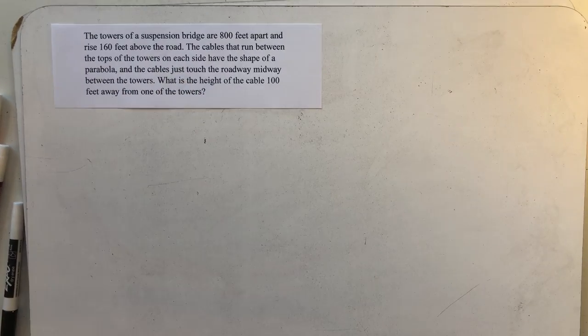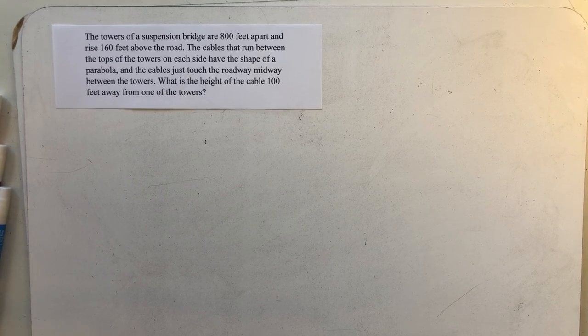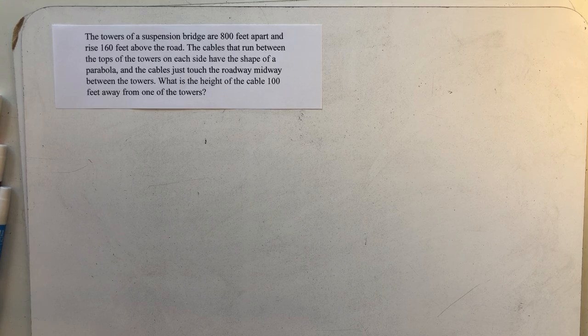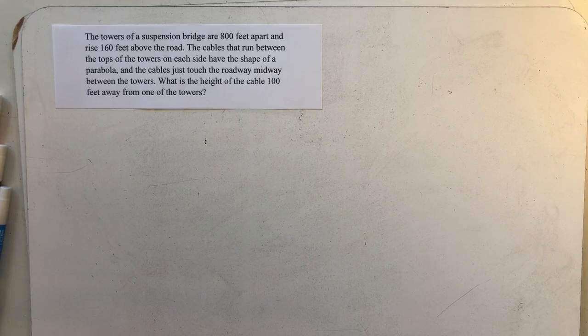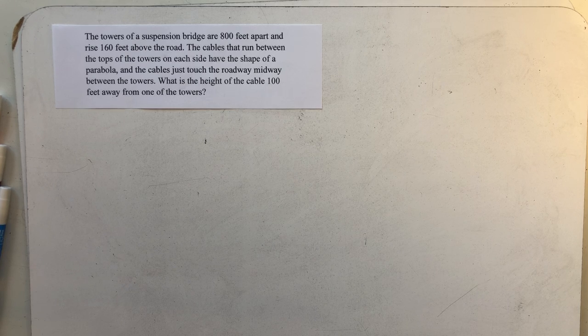The towers of a suspension bridge are 800 feet apart and rise 160 feet above the road. The cables that run between the tops of the towers on each side have the shape of a parabola, and the cables just touch the road midway between the towers. What is the height of the cable 100 feet away from one of the towers?